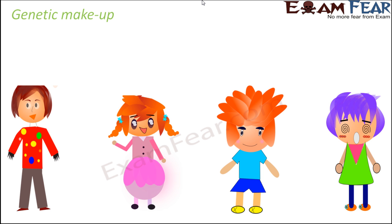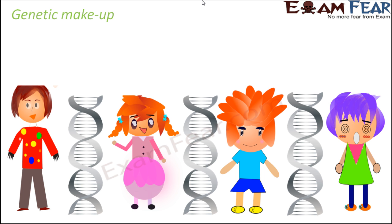Now you would have observed that all individuals look different. If you look at yourself and your friends or your cousins, they all look different — you are not exactly similar to anybody, except in the scenario of identical twins. You might have certain similarities with your siblings but still there are differences. So what causes this difference? Any two individuals differ because their DNA sequences differ. The sequence of the bases in DNA differs, and therefore the traits also differ, which is why they look different.